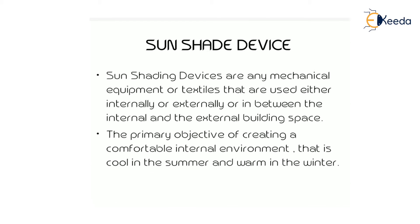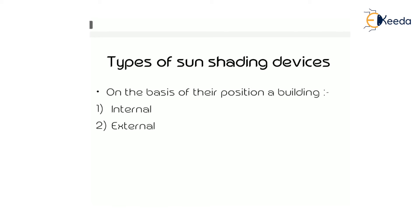Now, what is meant by sun shading device? Sun shading devices are any mechanical equipment or textiles that are used either externally, internally, or in between the internal and external building space. The primary objective is to prevent the sun from entering the house or building and to create a comfortable internal environment that is cool in summer and warm in winter. The types of sun shading devices are two: the internal type and the external type.